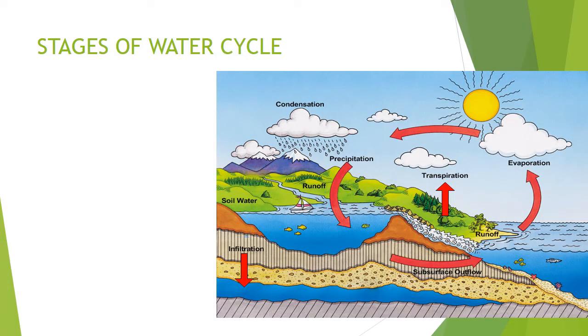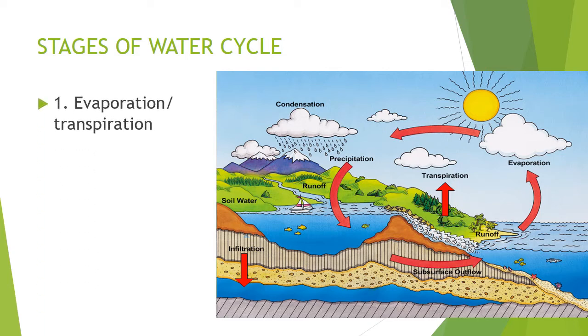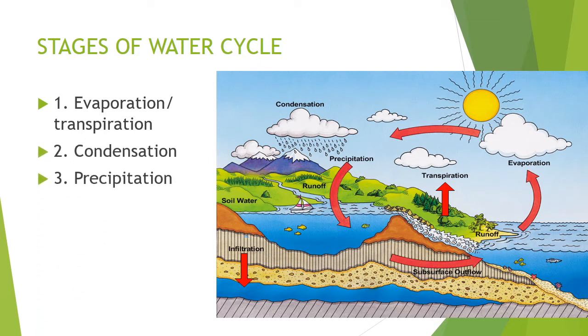There are four stages of the water cycle: evaporation or transpiration, condensation, precipitation, and collection.